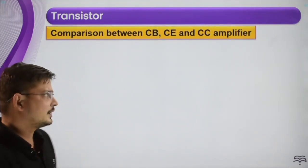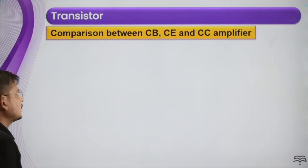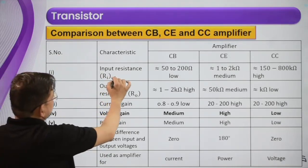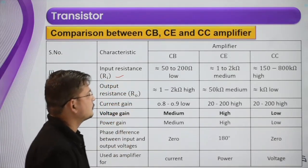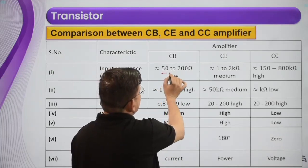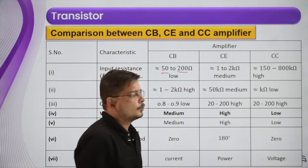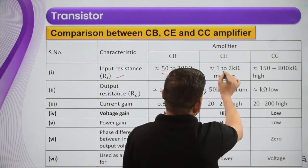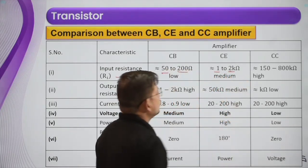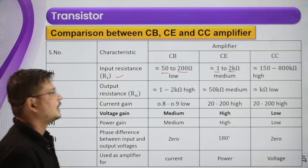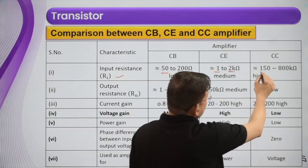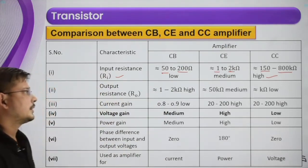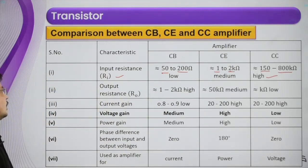Now we compare the characteristics of the three configurations. For input resistance: common base is low — around 50 to 200 ohms. Common emitter is medium — around 1 to 2 kilohms. Common collector is high — around 150 to 800 kilohms.